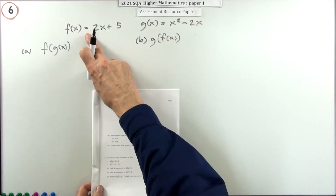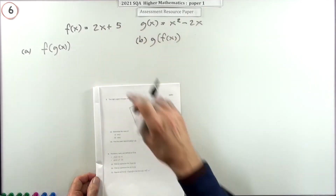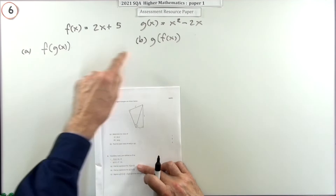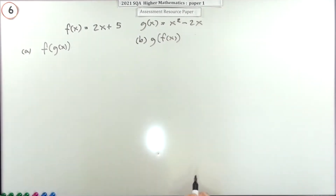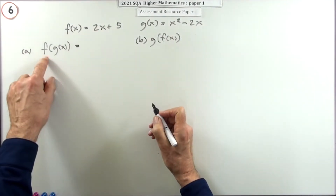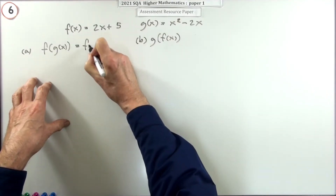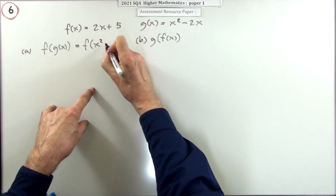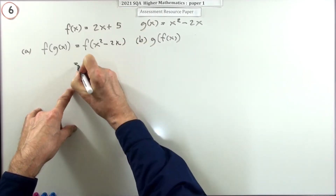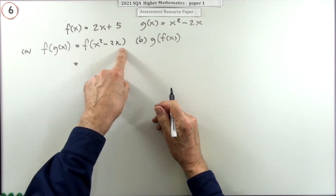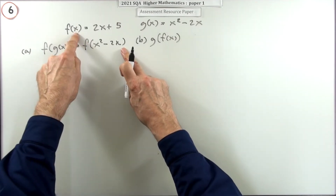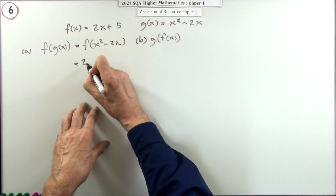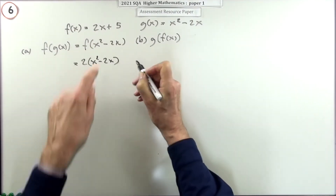You've got the two functions f of x and g of x. You define first of all f of g of x and then g of f of x. So f of g of x means f is going to act on g of x, which is x squared minus 2x. Whatever f gets hold of, it doubles it.